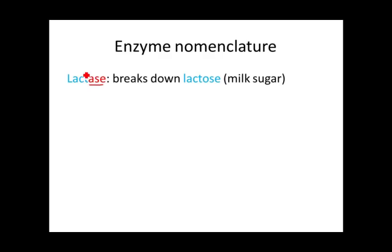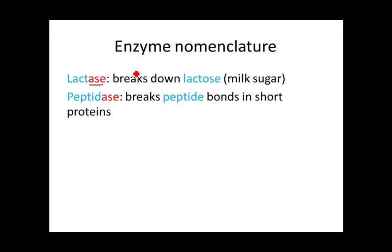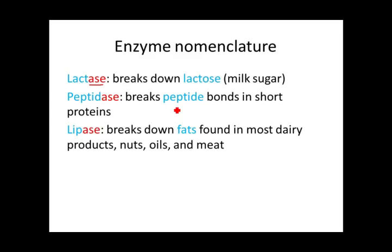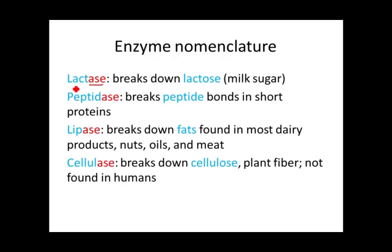Peptidase breaks down peptide bonds in short proteins. Lipase breaks down fats, which are lipids found in some foods we eat. Cellulase is an enzyme that breaks down cellulose, which is what cell walls are made of. Humans don't have cellulase, so we can't break down cellulose — it just goes through us as fiber.